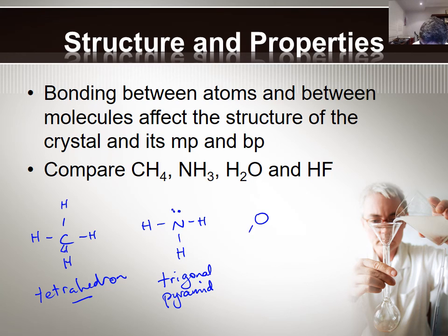Water, we know, has a bent structure. And it has two unbonded pairs of electrons. And hydrogen fluoride, I'll just draw that in as a bond, has three unbonded pairs of electrons. And it is what we call linear.